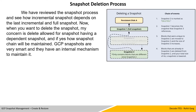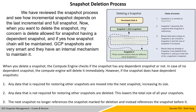Snapshot deletion process. We have reviewed the snapshot process and seen how incremental snapshots depend on the last incremental or full snapshot. When you want to delete a snapshot, the concern is: is deletion allowed for a snapshot that has dependent snapshots, and if yes, how will the snapshot chain be maintained? GCP snapshots have an internal mechanism to handle this. When you delete a snapshot, Compute Engine checks if that snapshot has any dependent snapshots. In case of no dependent snapshot, Compute Engine deletes it immediately.